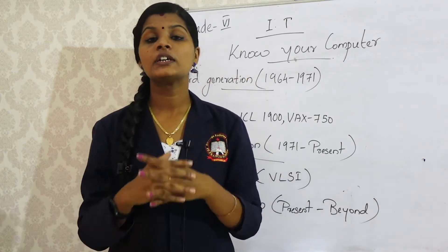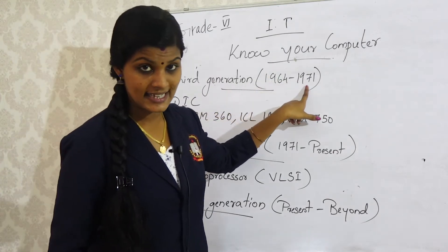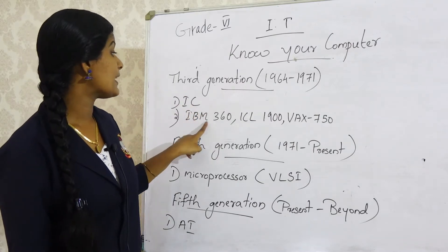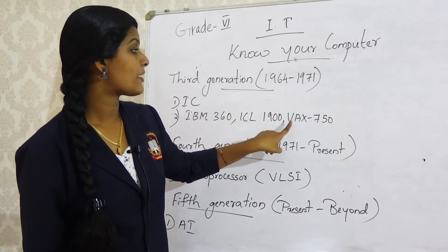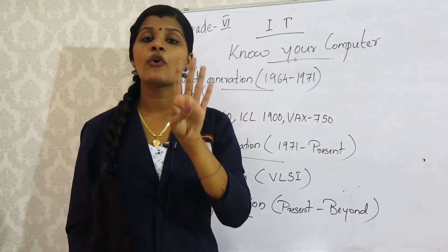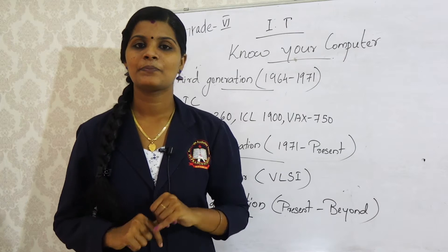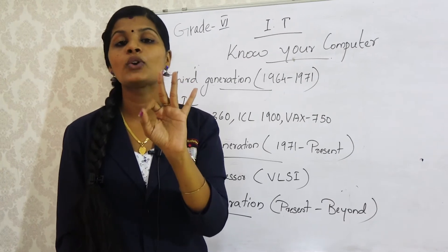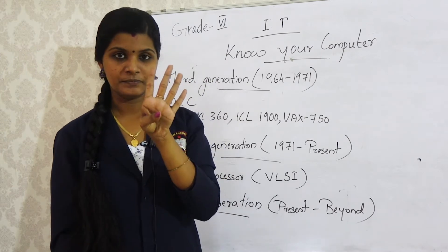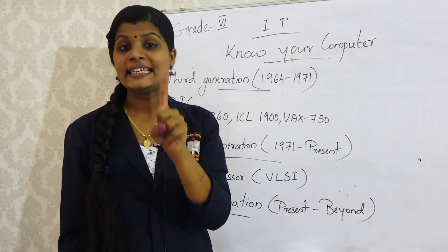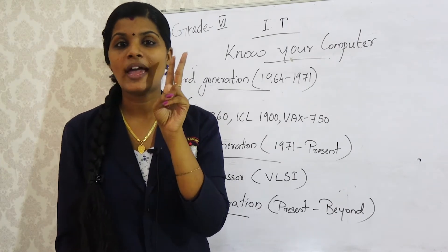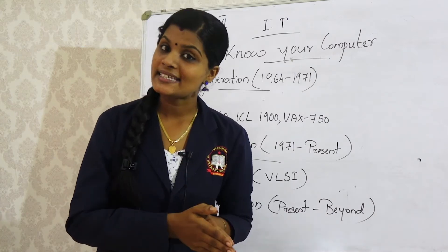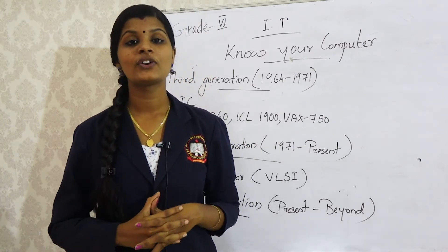So to summarize: the year of third generation computers is 1964 to 1971, the main component used was integrated circuit, and the examples are IBM 360, ICL-1900, and VAX-750. The advantages include high speed, small size, less heat emission, and machine-independent language. The disadvantages are the need for air conditioning and highly sophisticated manufacturing technology.